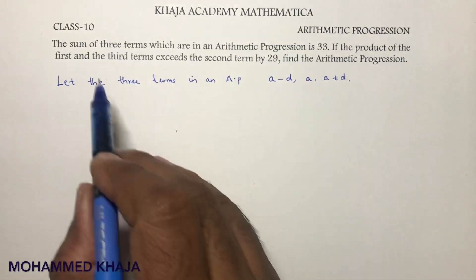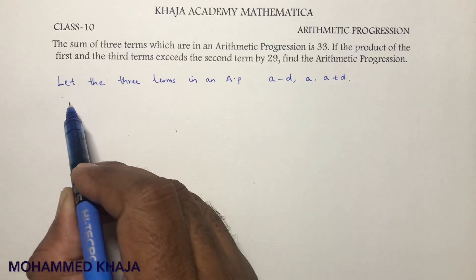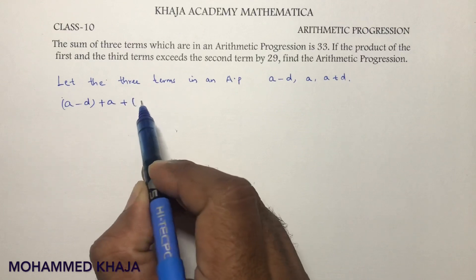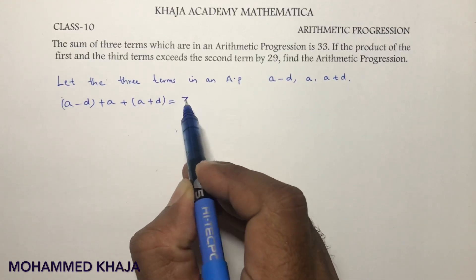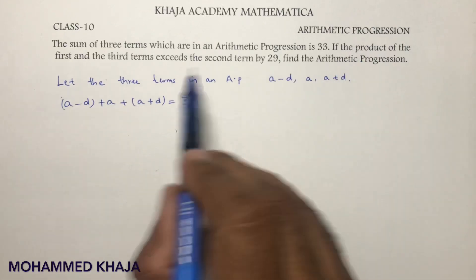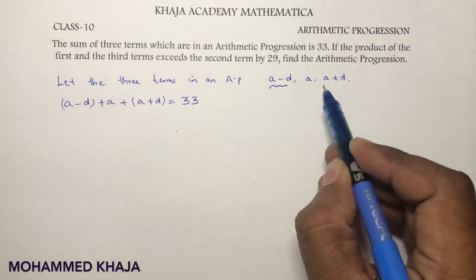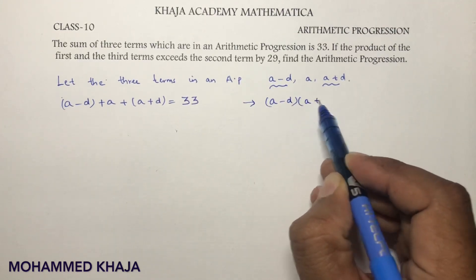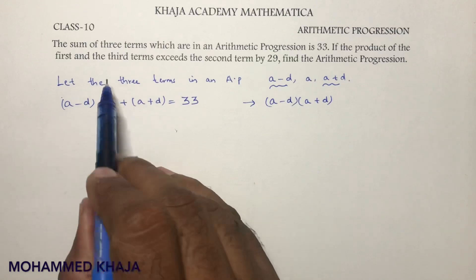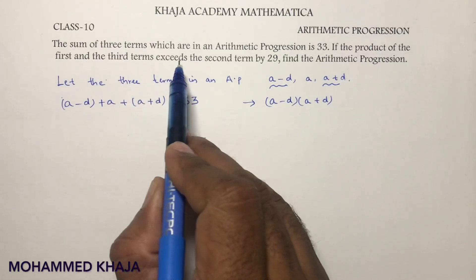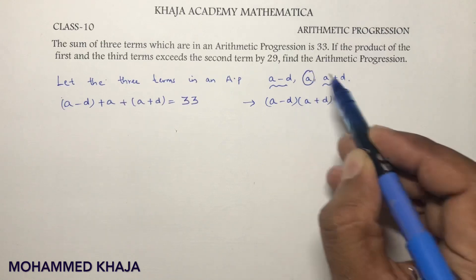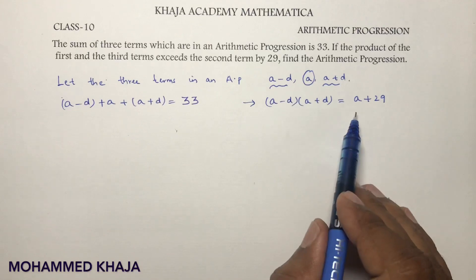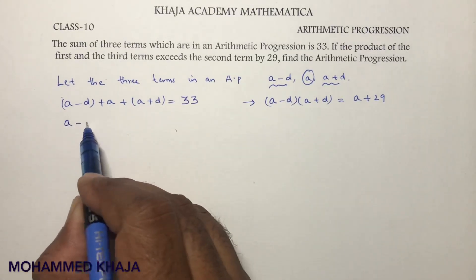Now, the sum of three terms: add all of them. The given condition is a minus d plus a plus a plus d equals 33. The second condition is the product of the first and third terms: (a minus d) into (a plus d) exceeds the second term a by 29. So (a minus d)(a plus d) equals a plus 29.